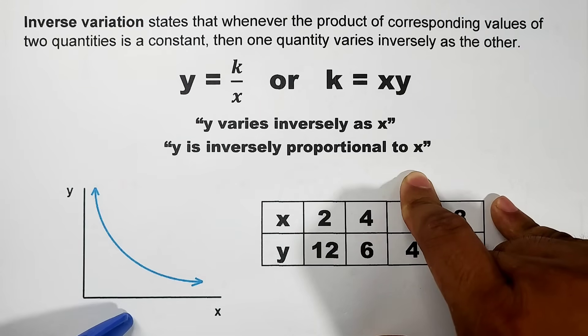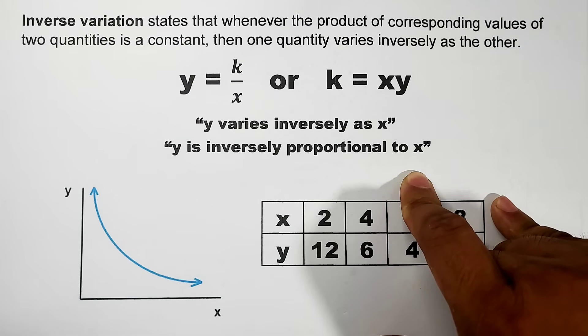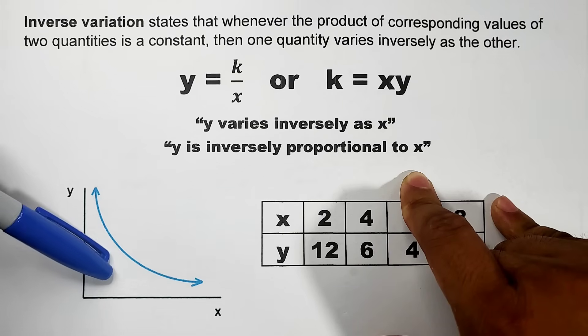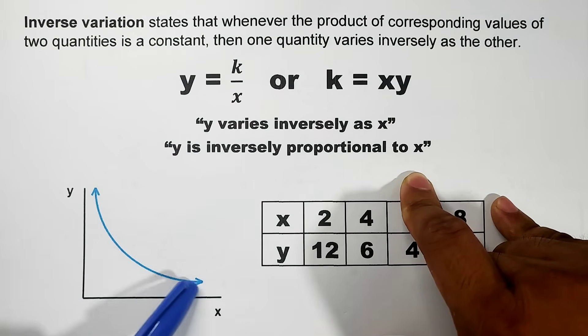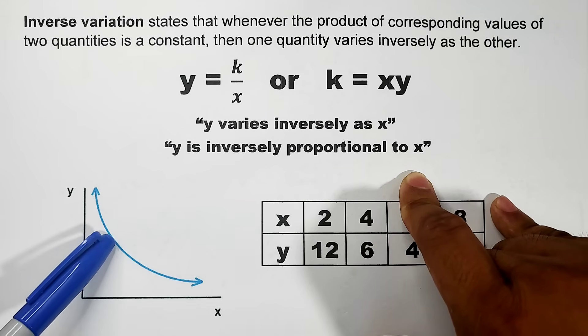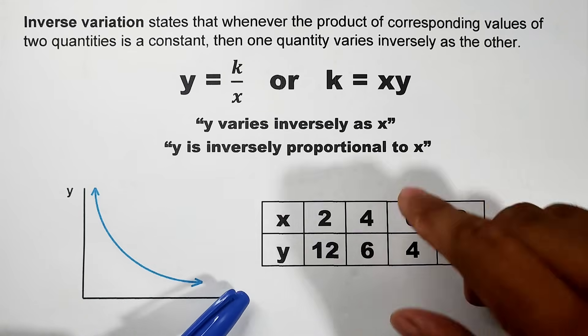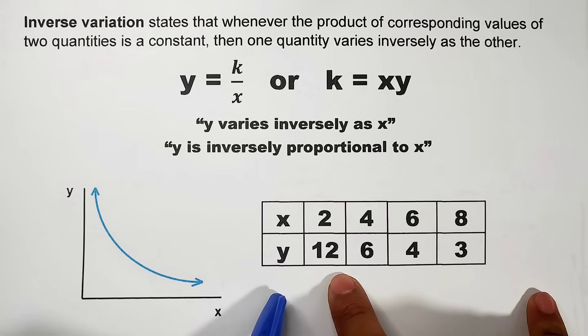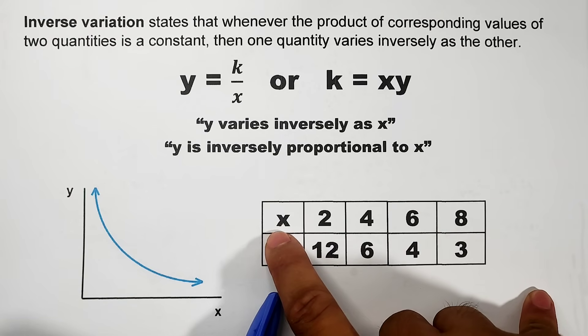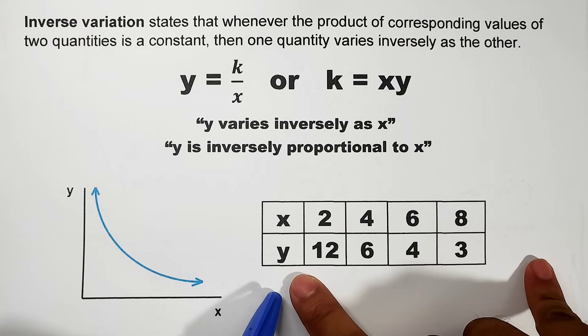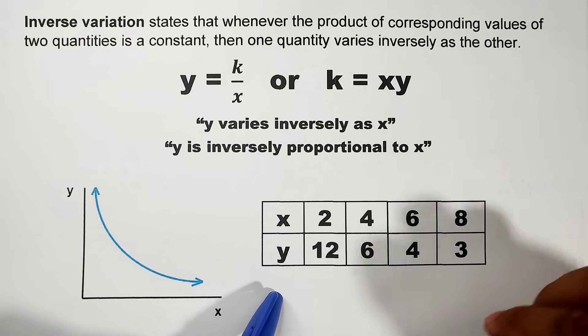As for the graph of inverse variation, this is the graph. Unlike direct variation which is a straight line passing through the origin, this one is not a straight line. It's a curve. For the table of values, as you can see here, the values of x are 2, 4, 6, 8 - it goes up, while the values of y are 12, 6, 4, and 3 - it goes down.